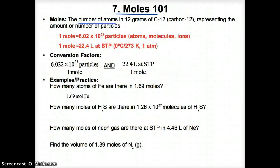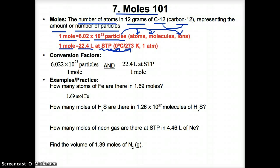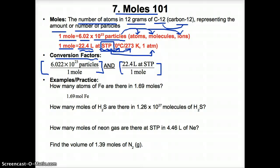Now let's discuss moles. Moles represent the number of atoms found in 12 grams of carbon-12, and this number represents the amount or number of particles you have. One mole equals 6.02 × 10²³ particles — meaning 6.02 × 10²³ atoms, molecules, or ions depending on what you're discussing. One mole also equals 22.4 liters at standard temperature and pressure. Standard temperature is 0°C or 273 K, and standard pressure is 1 ATM, 101.3 kPa, or 760 mmHg.